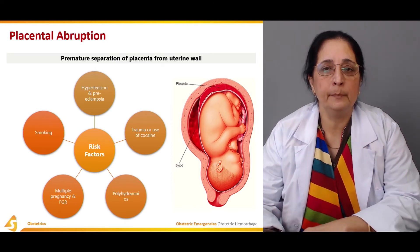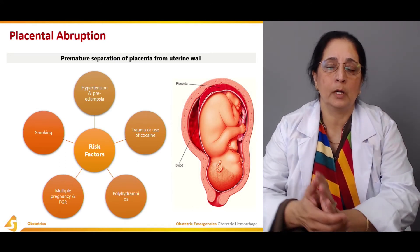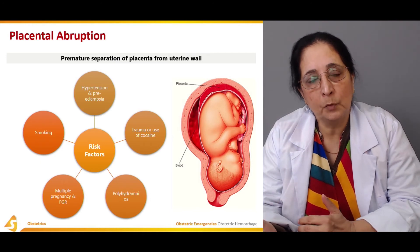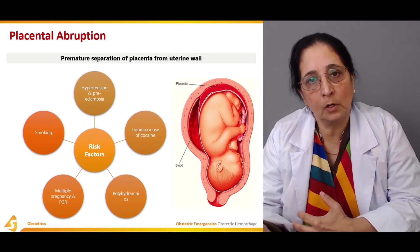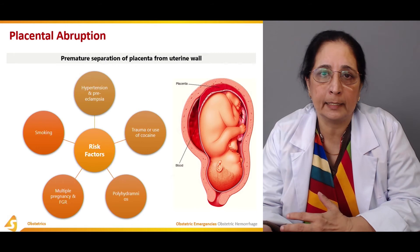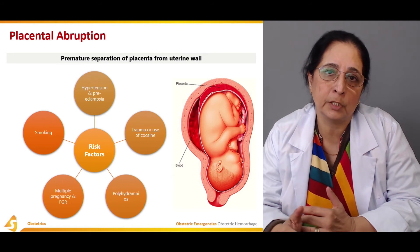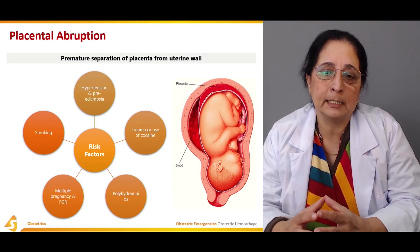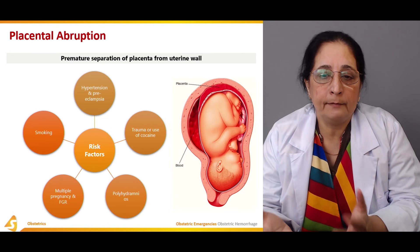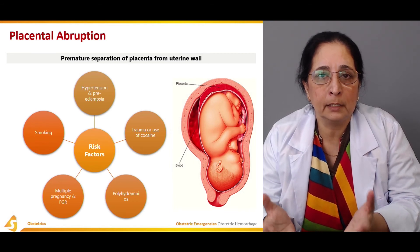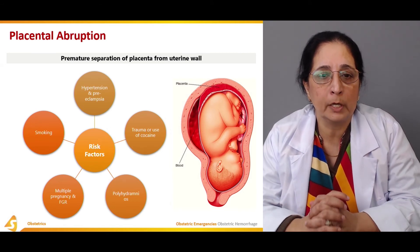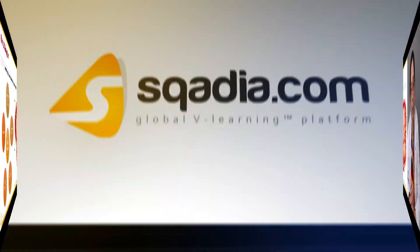Smoking — if the mother smokes, it can cause abruptio placentae. Smoking can also cause hypertension and preeclampsia, which can be associated with abruptio placentae. Smoking is also a cause of placental abruption.